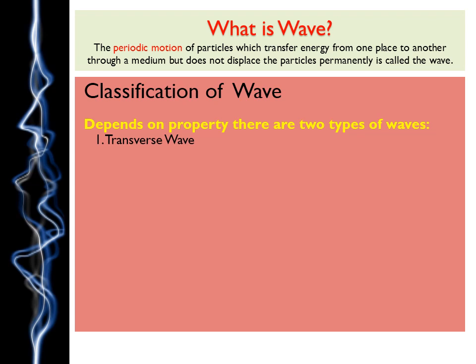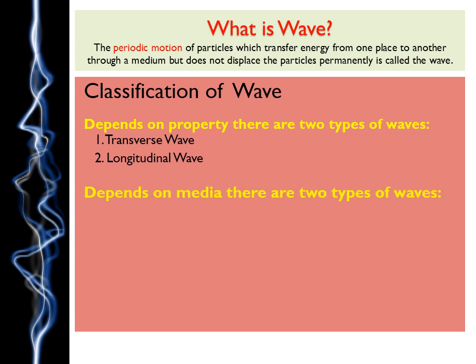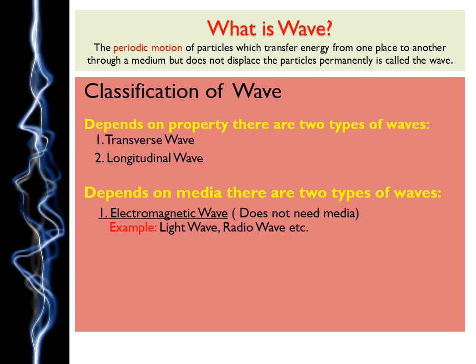The next topic is the classification of waves. Depending on property, there are two types of waves: number one is transverse wave and number two is longitudinal wave. Depending on media, there are also two types of waves: electromagnetic wave and mechanical wave. Electromagnetic wave means the wave that doesn't need any medium. Longitudinal and transverse waves are important, but most important are electromagnetic wave and mechanical wave.